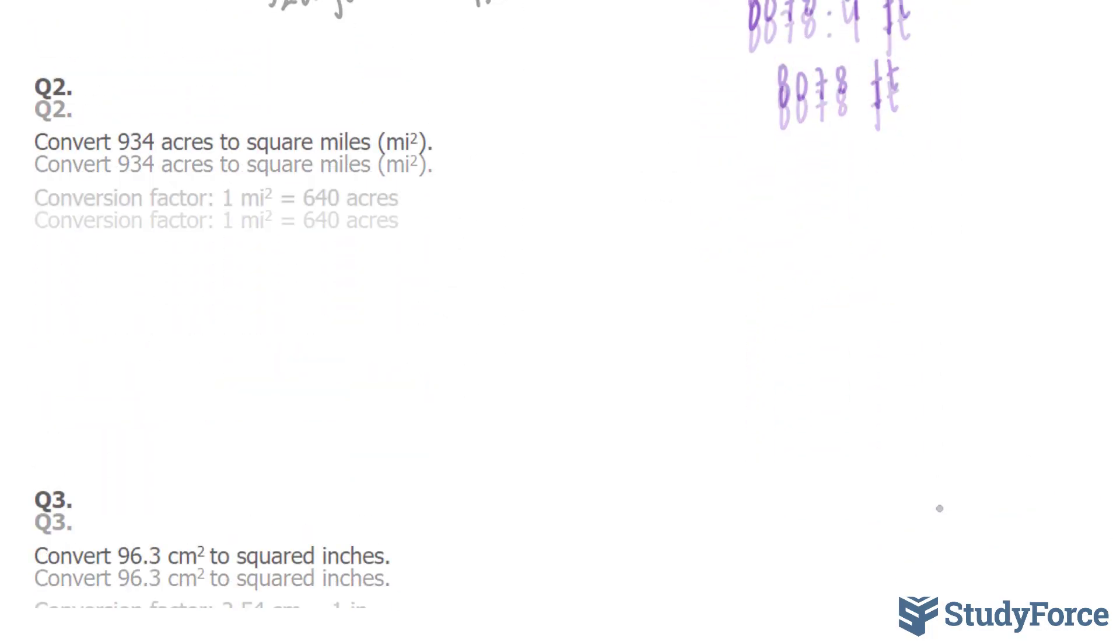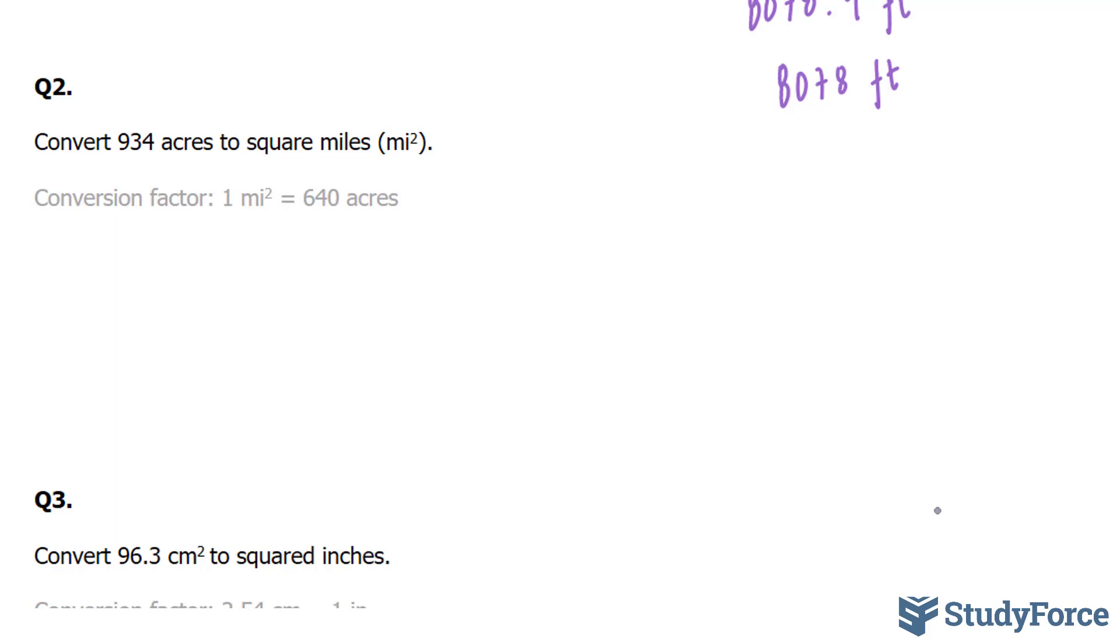Let's move on to question number two. In this question, they're asking us to convert 934 acres to square miles. So 934 acres to square miles, which is represented as mi to the power of 2. This time, the conversion factor that has been provided is shown here. And there are two ways to write this. Either 1 mile squared over 640 acres or 640 acres over 1 mile squared.